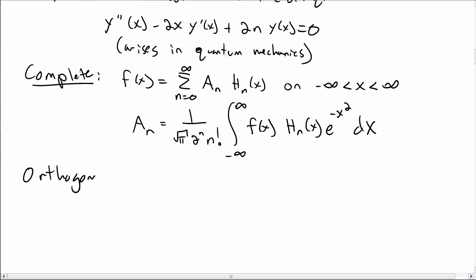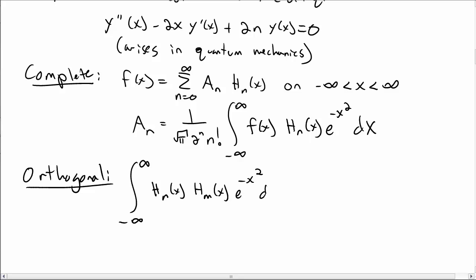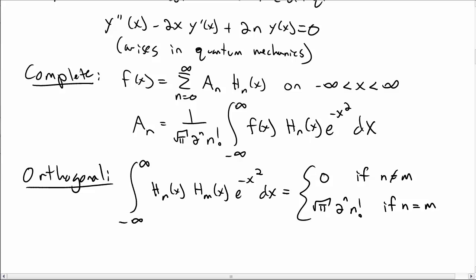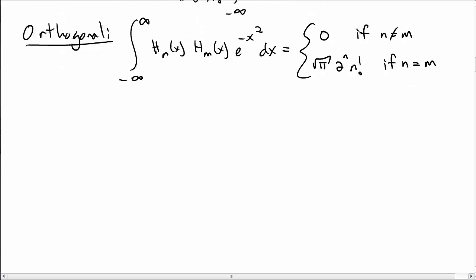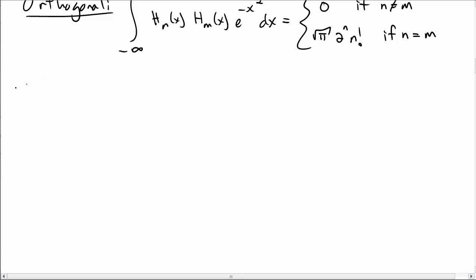Hermite polynomials are also orthogonal. The integral from −∞ to ∞ of H_n(x) H_m(x) e^(−x²) gives 0 if n ≠ m, and some nonzero number when n = m. Like Legendre polynomials, you can look up Hermite polynomials in a table or compute them with software.